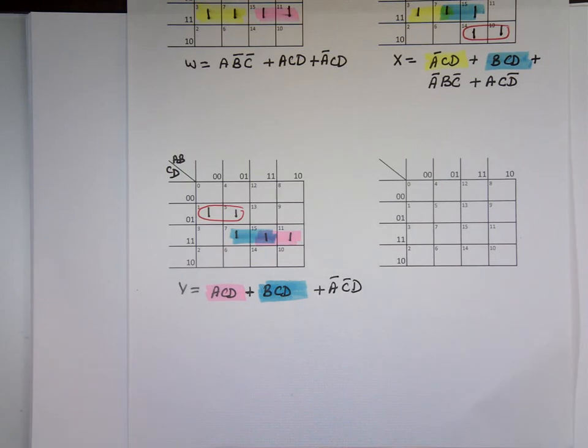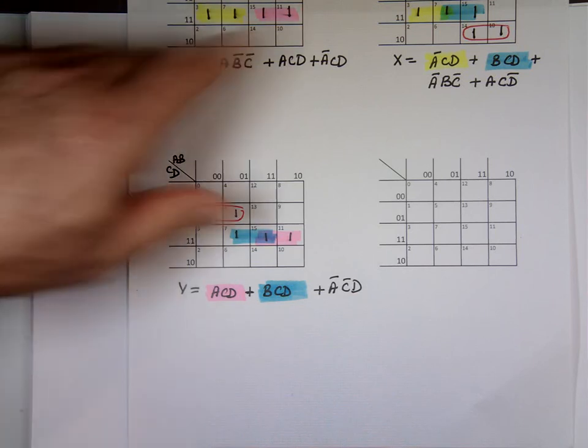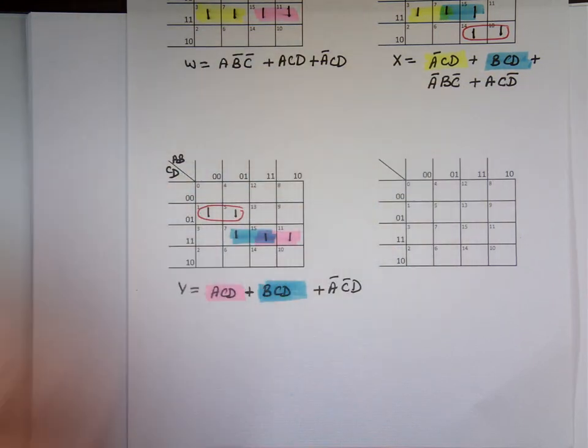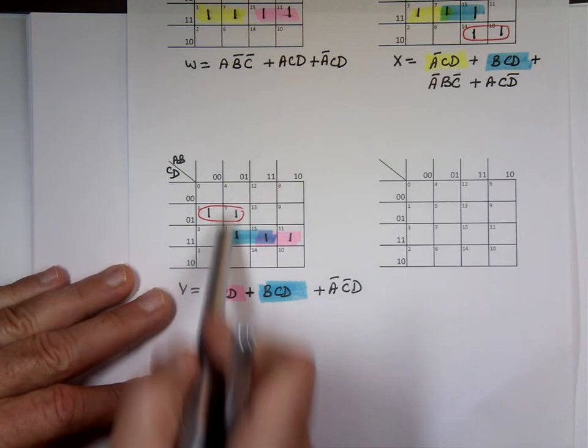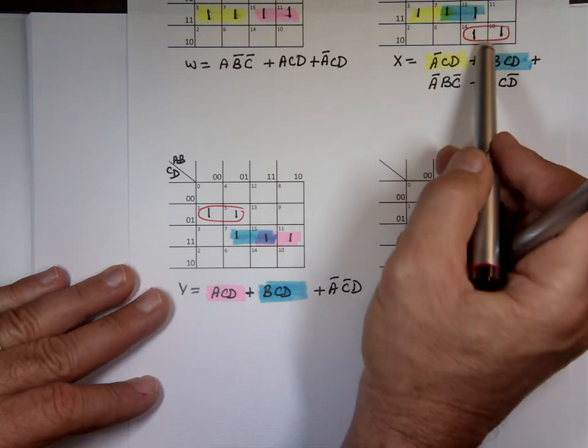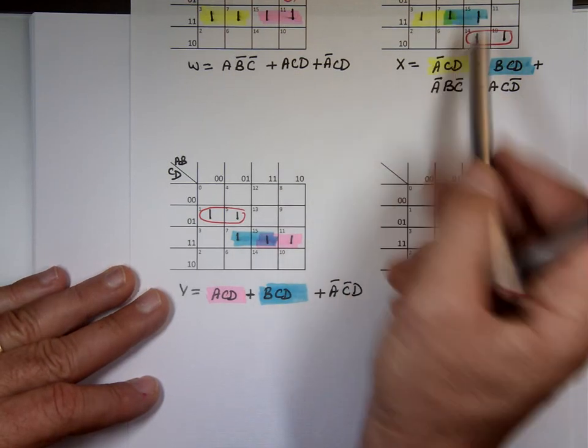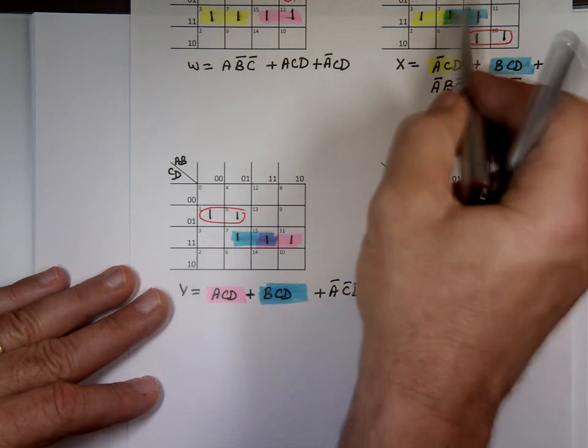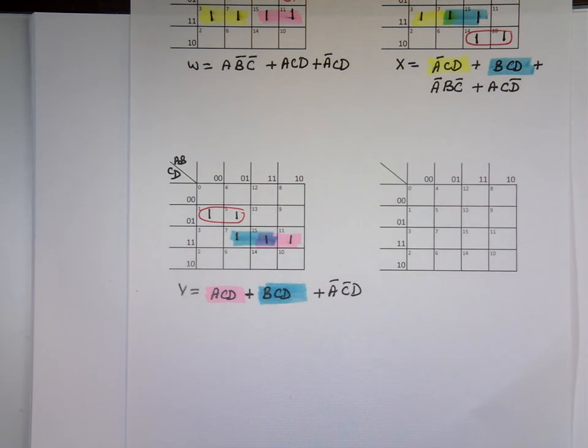So notice I found the sum of product for each one. And I was looking for matching. Because you could have took this with this here. But that one helped me here. And I could have took to cover that one, I could have took this with this. That one helped me. By taking this and this, those are matching ones. I can use the same gate for both of them.